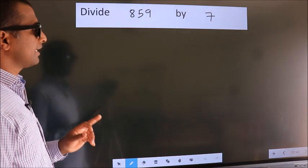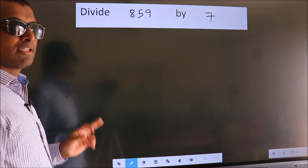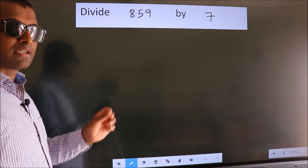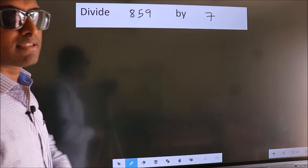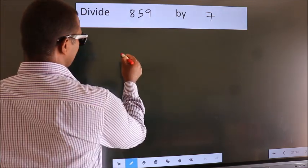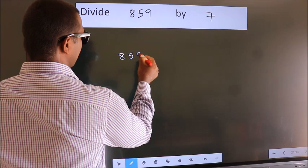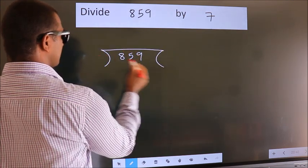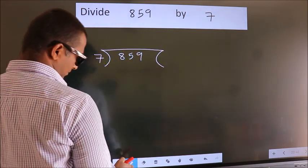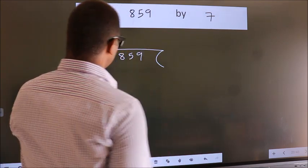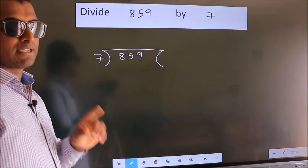Divide 859 by 7. To do this division we should frame it in this way. 859 here, 7 here. This is your step 1.